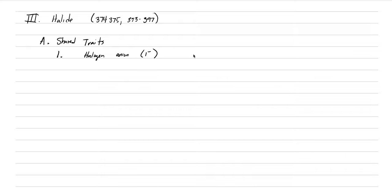You probably don't know what they all are off the top of your head, but it's things like chlorine, bromine, iodide, and fluorine. Those are our halogens, and those halogens bond with a really weak cation.